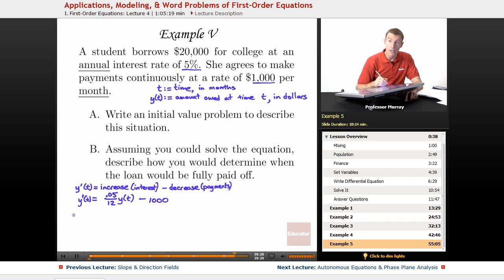Y prime of t is equal to 0.05 over 12 y of t minus 1,000. What we've done there is we've written a differential equation that describes the amount she owes at any given time and how it's changing. We also need an initial condition. So that's the amount she owes initially, which is $20,000. So y of 0 is $20,000.